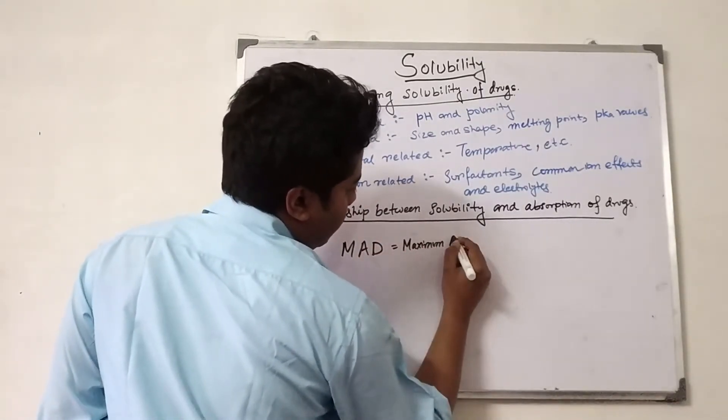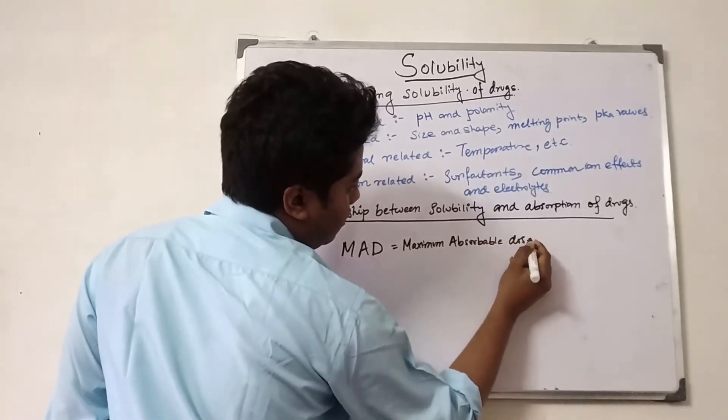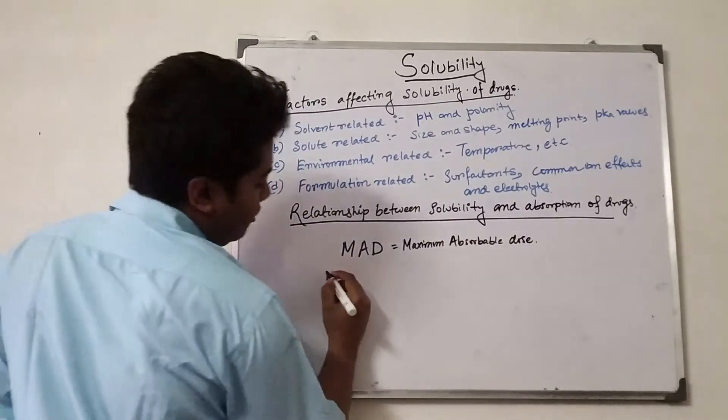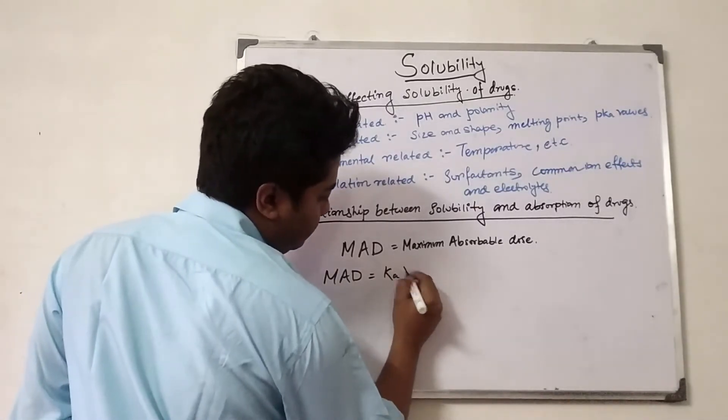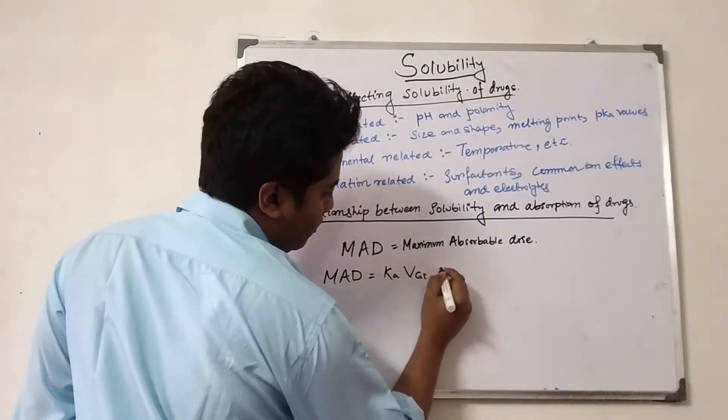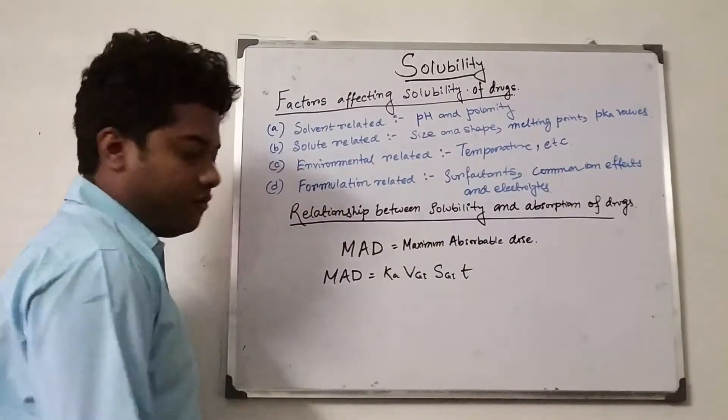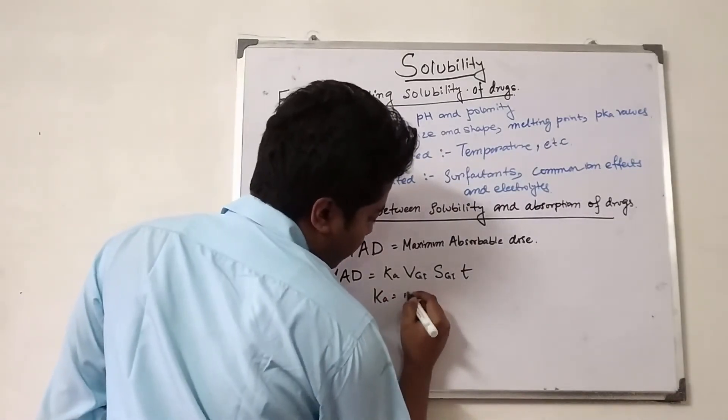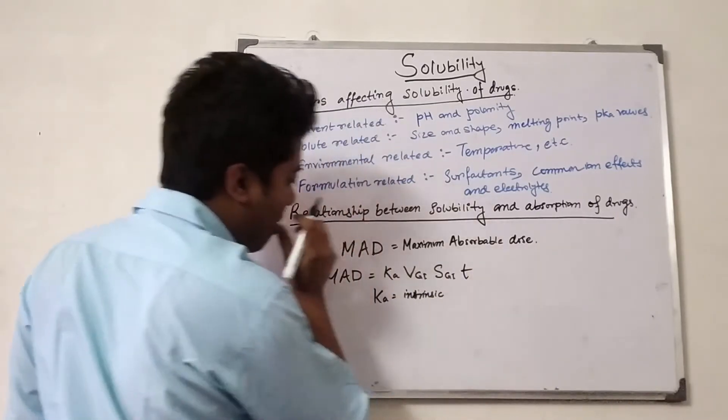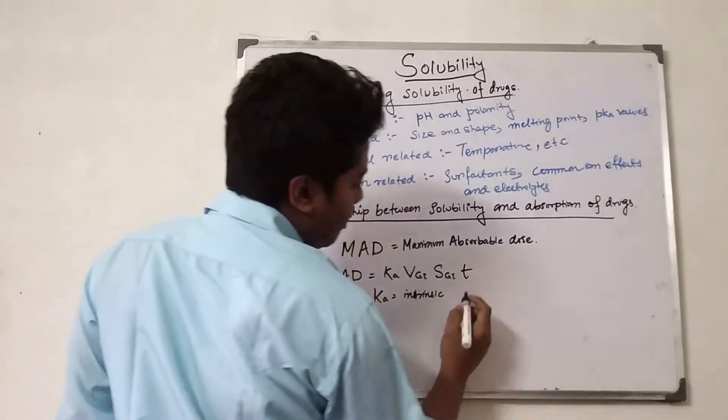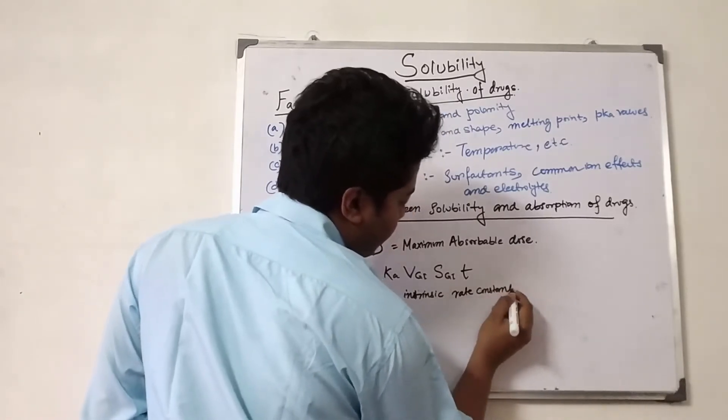Maximum absorbable dose (MAD): the general formula for this is Ka times Vgi times Sgi times T, where Ka is the intrinsic rate constant.